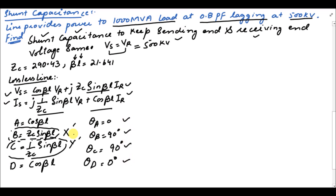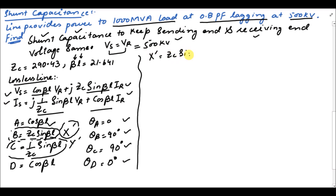From these equations we know the values of the constants and angles. In order to find the X_dash value we use the formula: X_dash is equal to Zc·sin(beta·l). We know the value of beta·l is 21.641 and Zc is 290.43. Putting these values into the equation gives the value of X_dash, the reactance of the line, which is equal to 107.11 ohms.